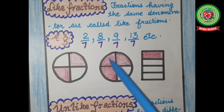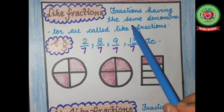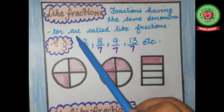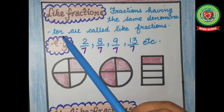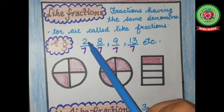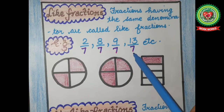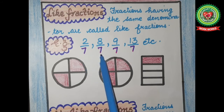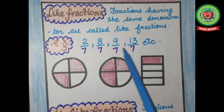Next type is like fractions. Like meaning same fractions. The definition: fractions having the same denominator are called like fractions — the number below the line will be the same. For example: 2 upon 7, 8 upon 7, 9 upon 7, 13 upon 7, etc. Students, you can see the denominator is 7, 7, 7 and 7. These fractions are like fractions because the denominators are the same.